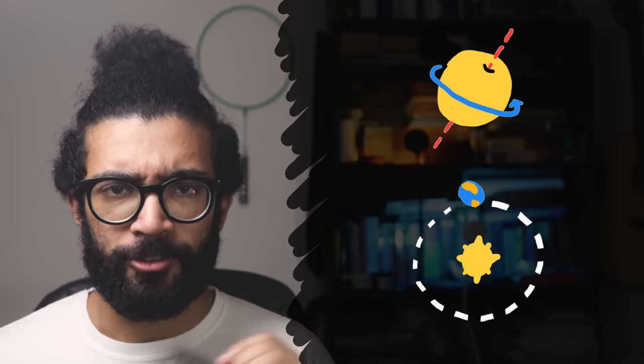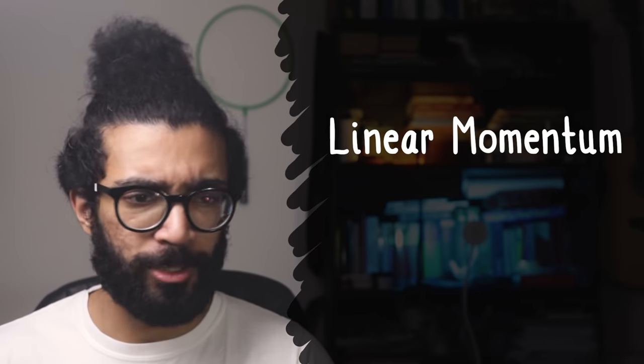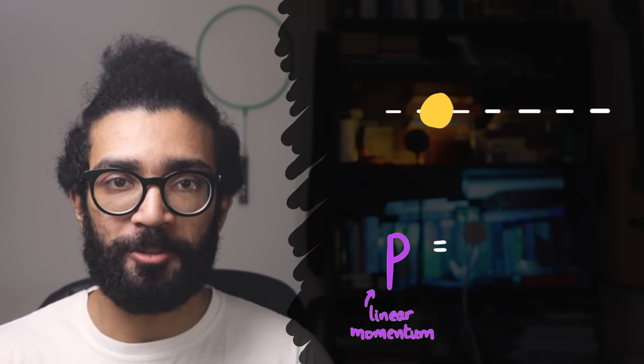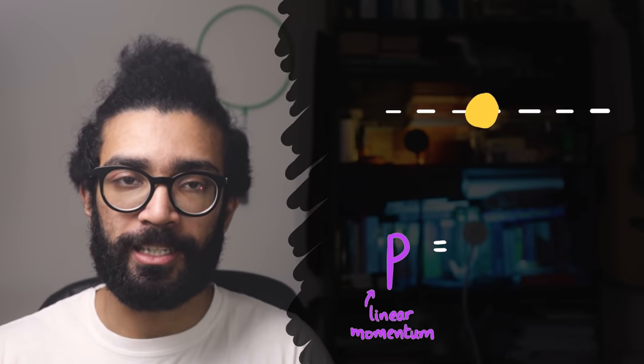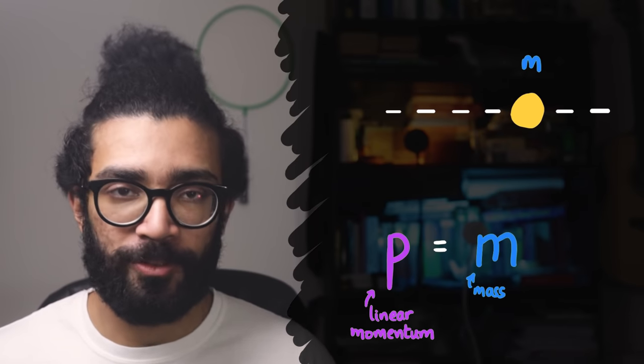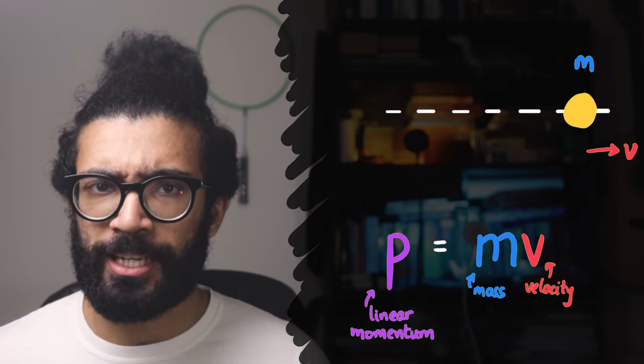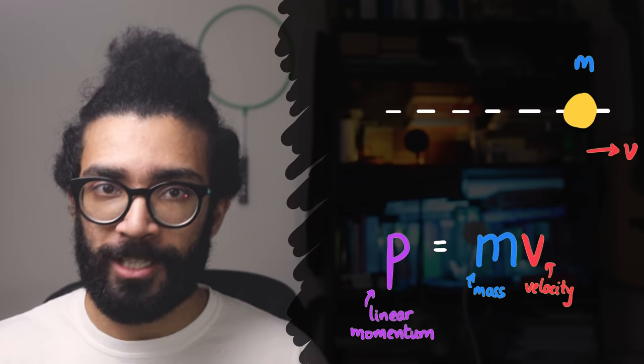This is slightly different to the linear momentum that we learn about at school. Usually we just call it momentum, which is what an object has when it moves along a straight line. You might recall that the momentum of an object, the linear momentum technically, is found by multiplying the mass of the object by its velocity. And angular momentum is similar in many ways, but is associated with angular motion rather than linear motion.